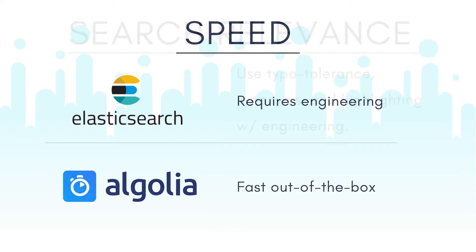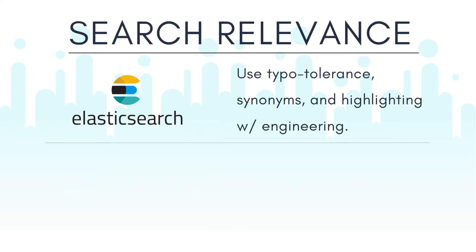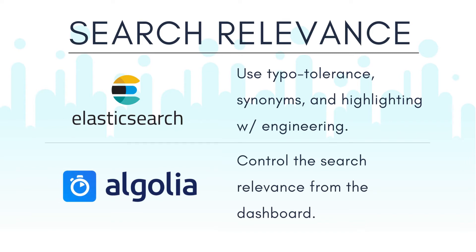Coming to the topic of configuring search relevance, Elasticsearch uses Lucene under the hood to deliver results and includes typo-tolerance, synonyms, and highlighting. The challenge that developers will face is configuring and iterating on the search relevance. In the case of Algolia, businesses have the controls to configure search relevance settings from their dashboard and go live in real time.